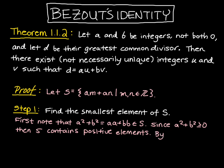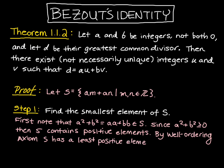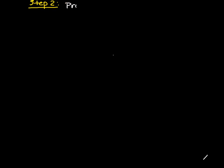So by the Well-Ordering Axiom, we know that element exists, and we're going to call it t. So we've got our smallest element of S, and we're going to call it t. The next step is we want to prove that t, found in step one, is the GCD of a and b.